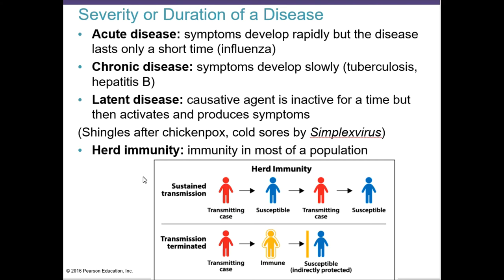When we think about the severity or duration of the disease, you can classify diseases as acute, chronic, or latent. Acute diseases develop symptoms rapidly but last only a short time — for example, influenza. A chronic disease develops symptoms slowly and lasts a long time to disappear — examples are tuberculosis and hepatitis B. Infectious mononucleosis can also become chronic.